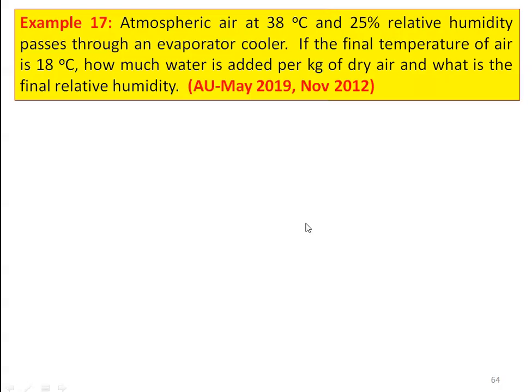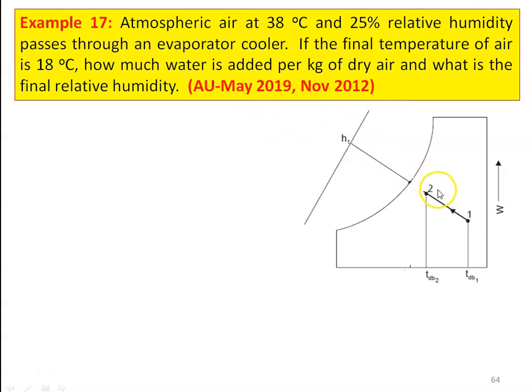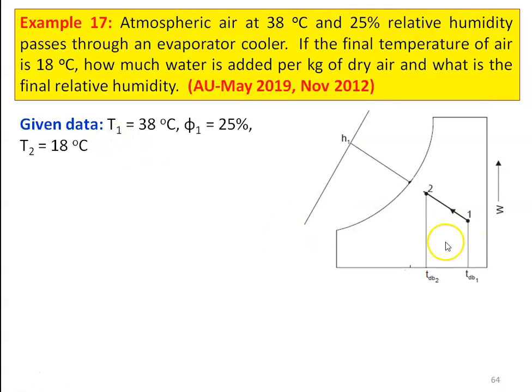In example number 17, atmospheric air at 38 degree Celsius and 25 percent relative humidity passes through an evaporative cooler. If the final temperature of the air is 18 degree Celsius, how much water is added per kg of dry air and what is the final relative humidity? This is from May 2019 and November 2012, Anna University question paper. This is the evaporative cooling process. The given data: T1 equal to 38 degree Celsius, φ1 equal to 25 percent, and T2 equal to 18 degree Celsius.